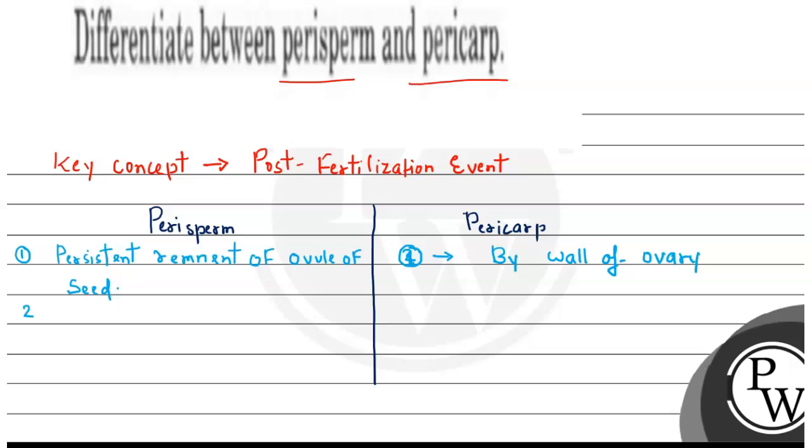Second difference: if we look at where it is seen, perisperm is seen in very few seeds, but pericarp is seen in all type of seeds.